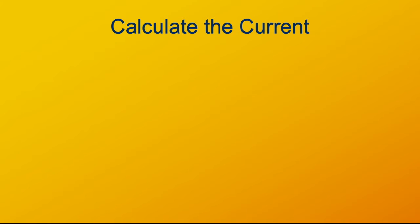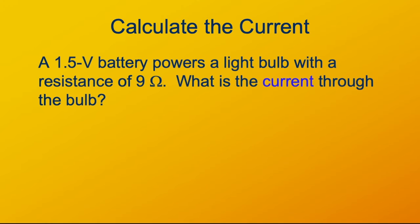I'm going to give you a practice problem. I want you, when you get the problem, to stop, work the problem, and then start the video up again. A 1.5 volt battery powers a light bulb, and the light bulb has a resistance of 9 ohms. What's the current through the bulb?